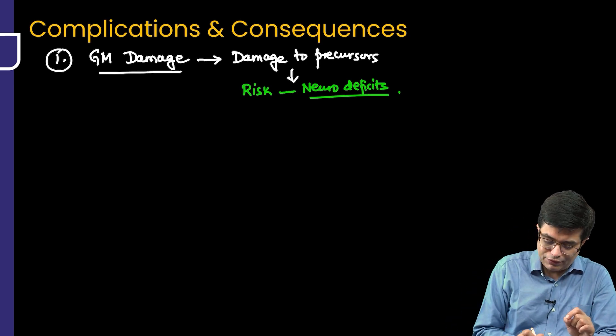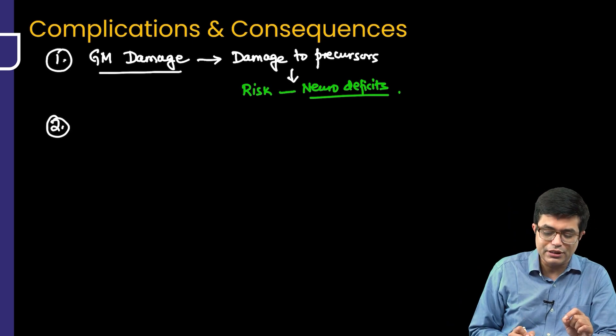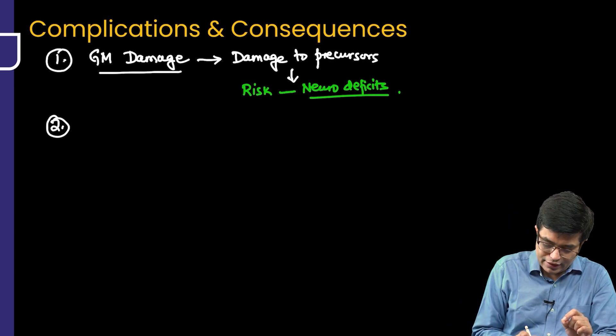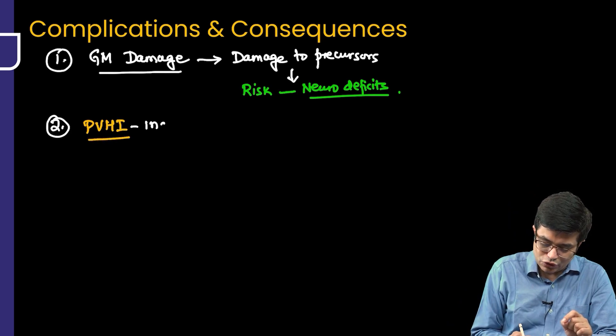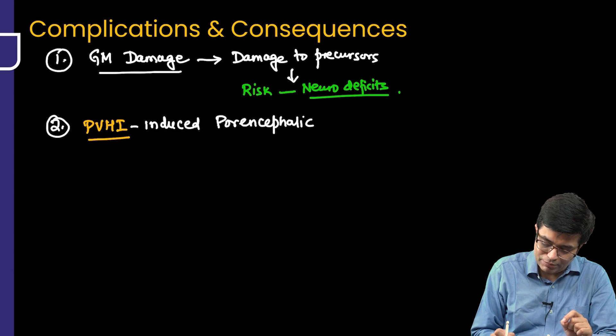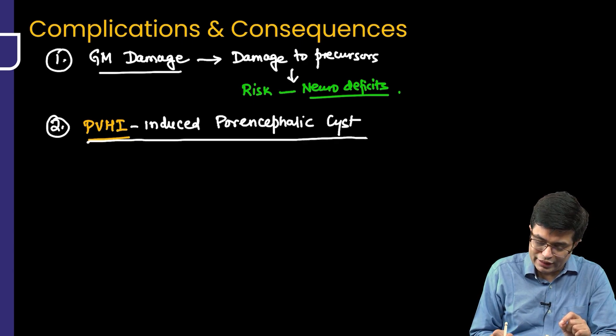Second type of complication and consequence which can happen is PVHI. What is PVHI? Periventricular hemorrhagic infarction. PVHI induced porencephalic cyst can form. Second complication or consequence is PVHI induced porencephalic cyst.